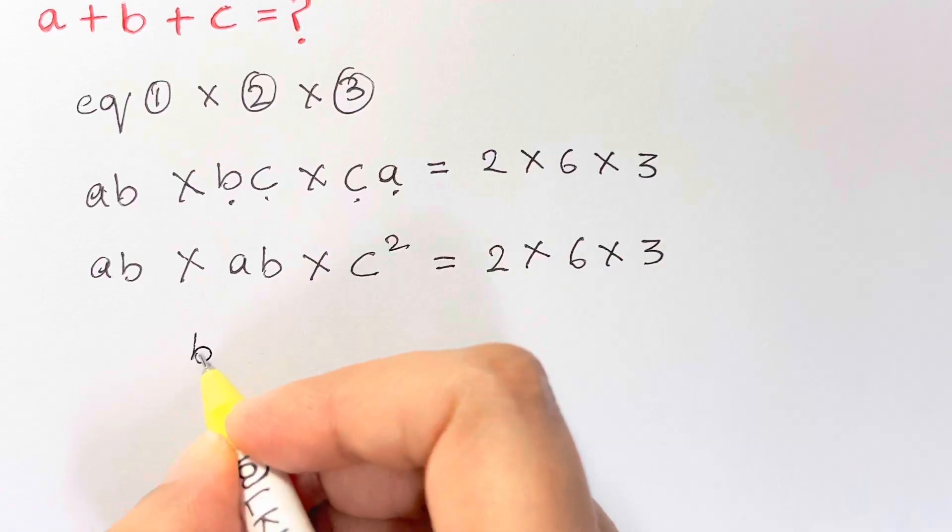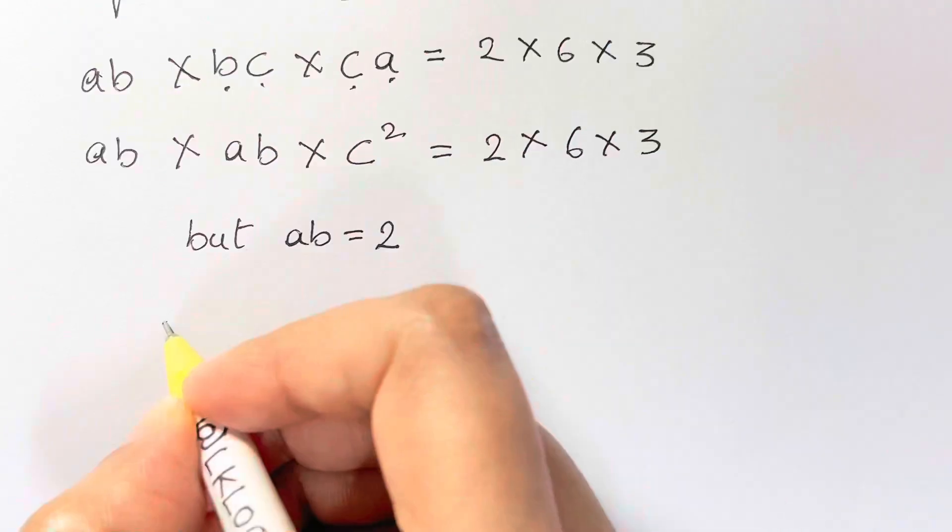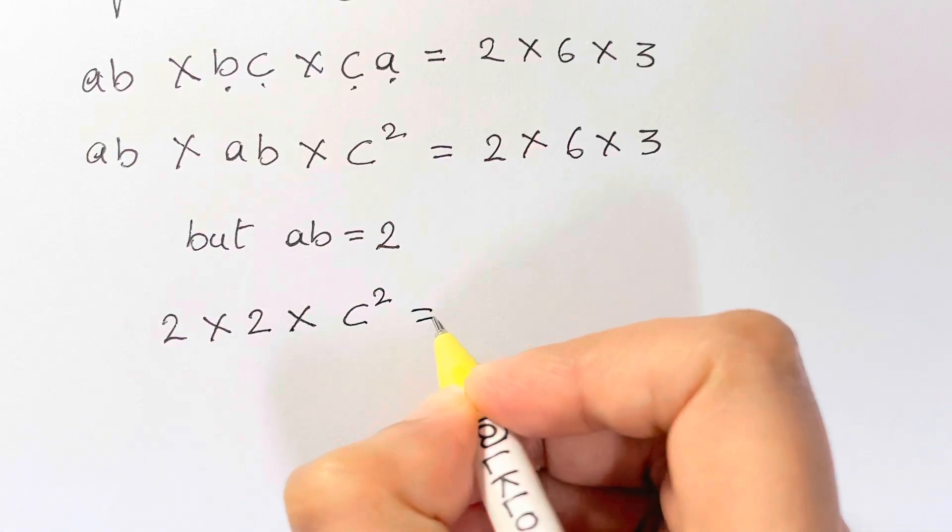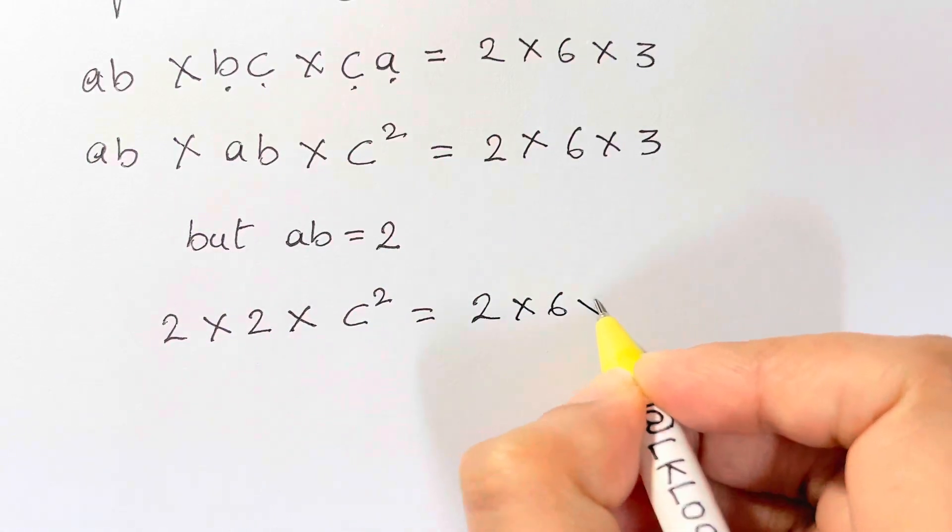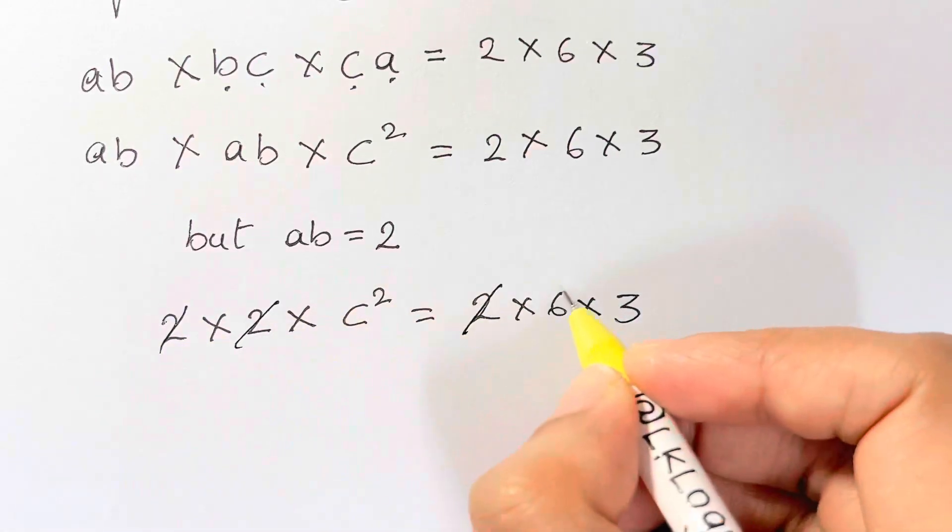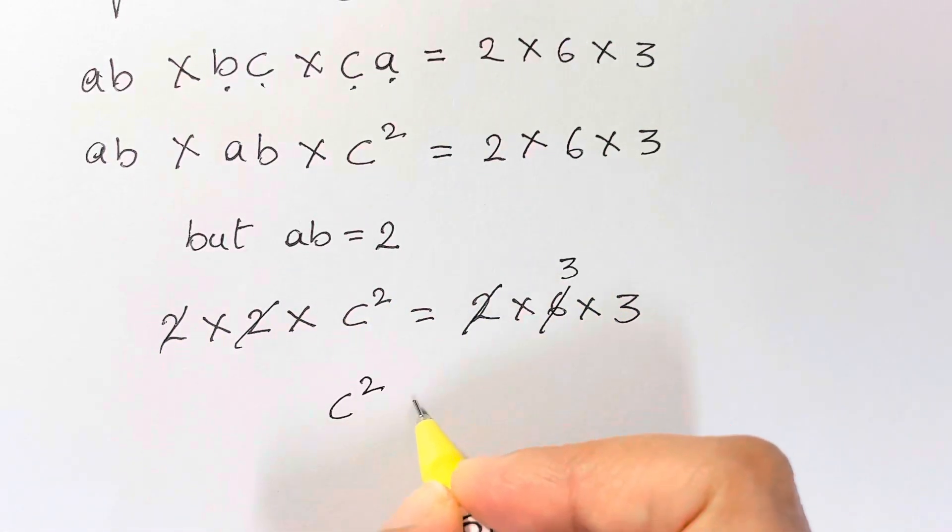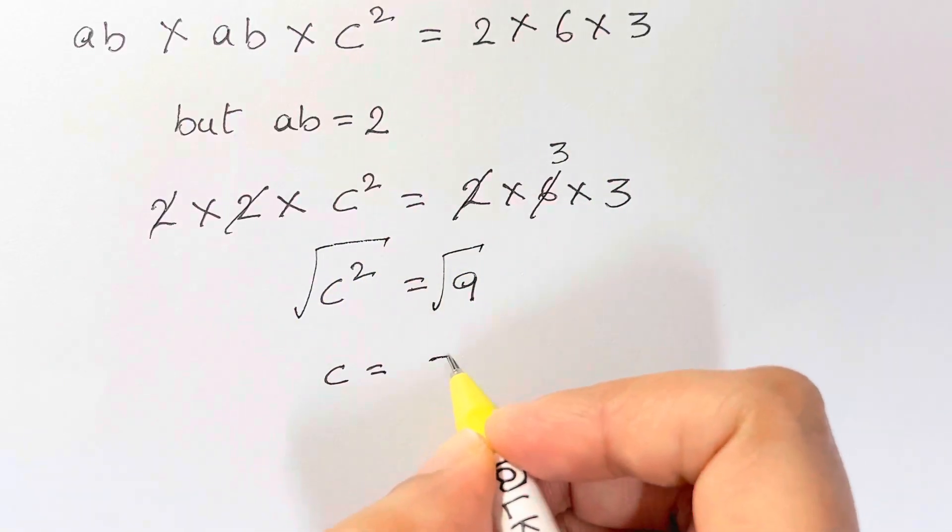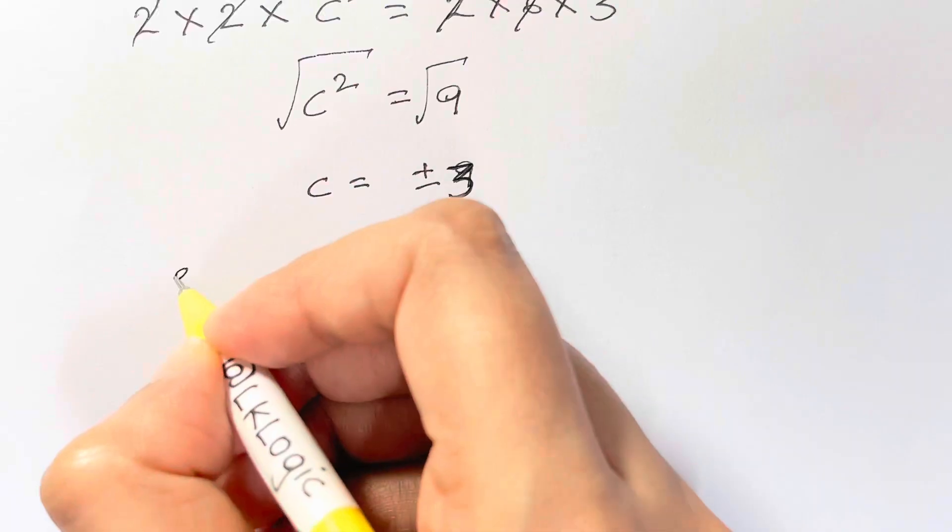But we already know that AB equals 2. So let's substitute 2 times 2 times C squared is equal to 2 times 6 times 3. 2, 2 gets cancelled and 2 times 3 is 6. So we have C squared equals to 9 and C is equal to plus or minus, let's take square root on both sides, that is plus or minus 3.